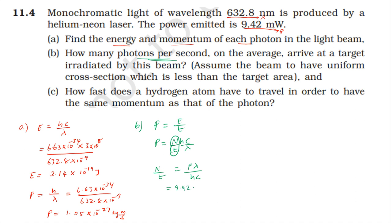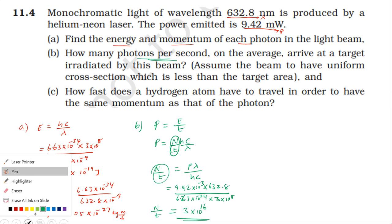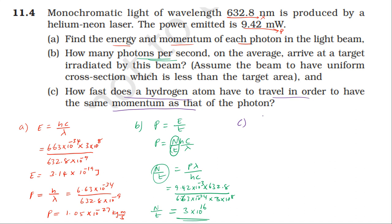Power is 9.42 times 10 power minus 3 times lambda 632.8 divided by h value 6.63 times 10 power minus 34 times c, 3 times 10 power 8. Number of photons is 3 times 10 to the power 16.